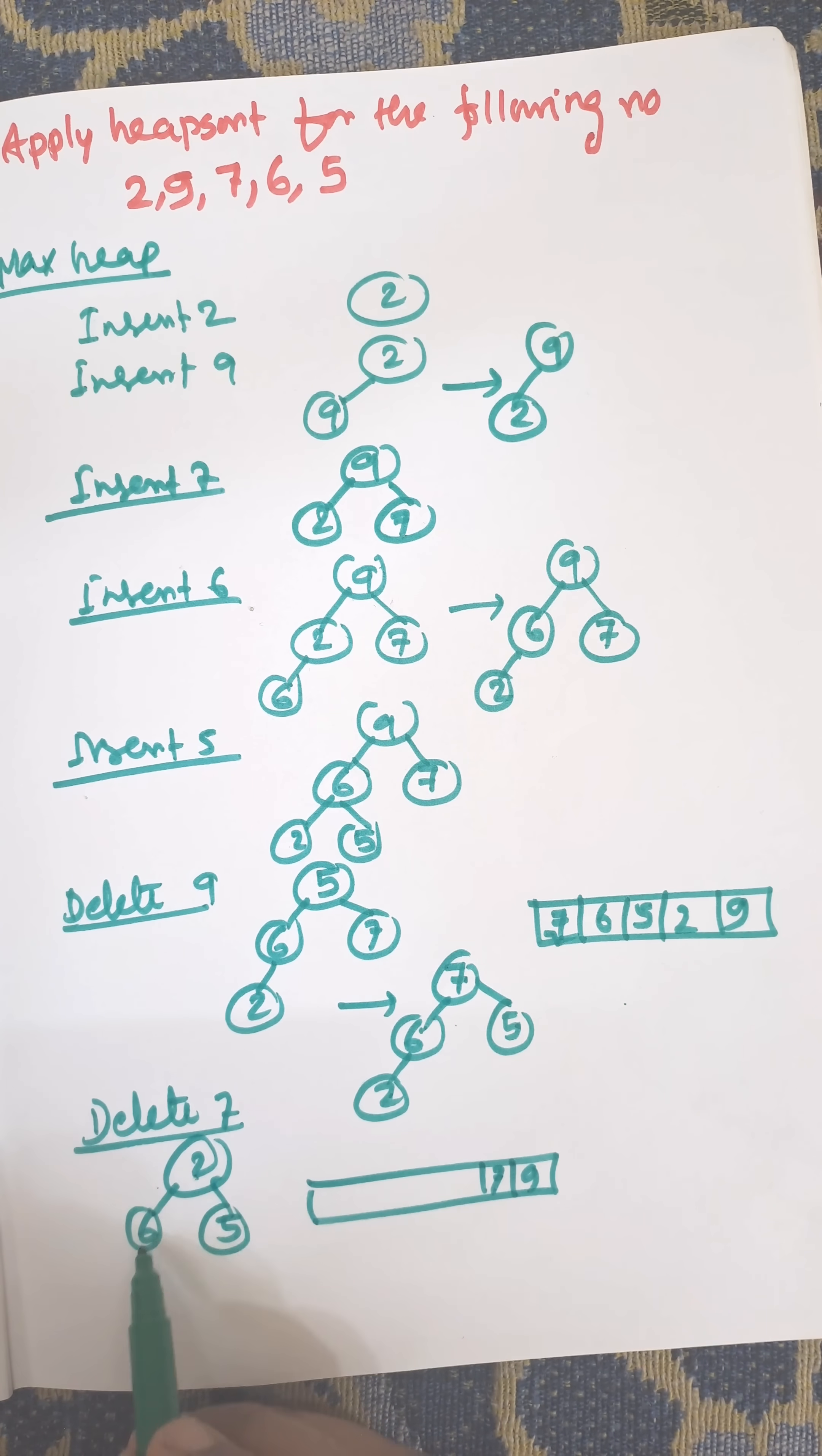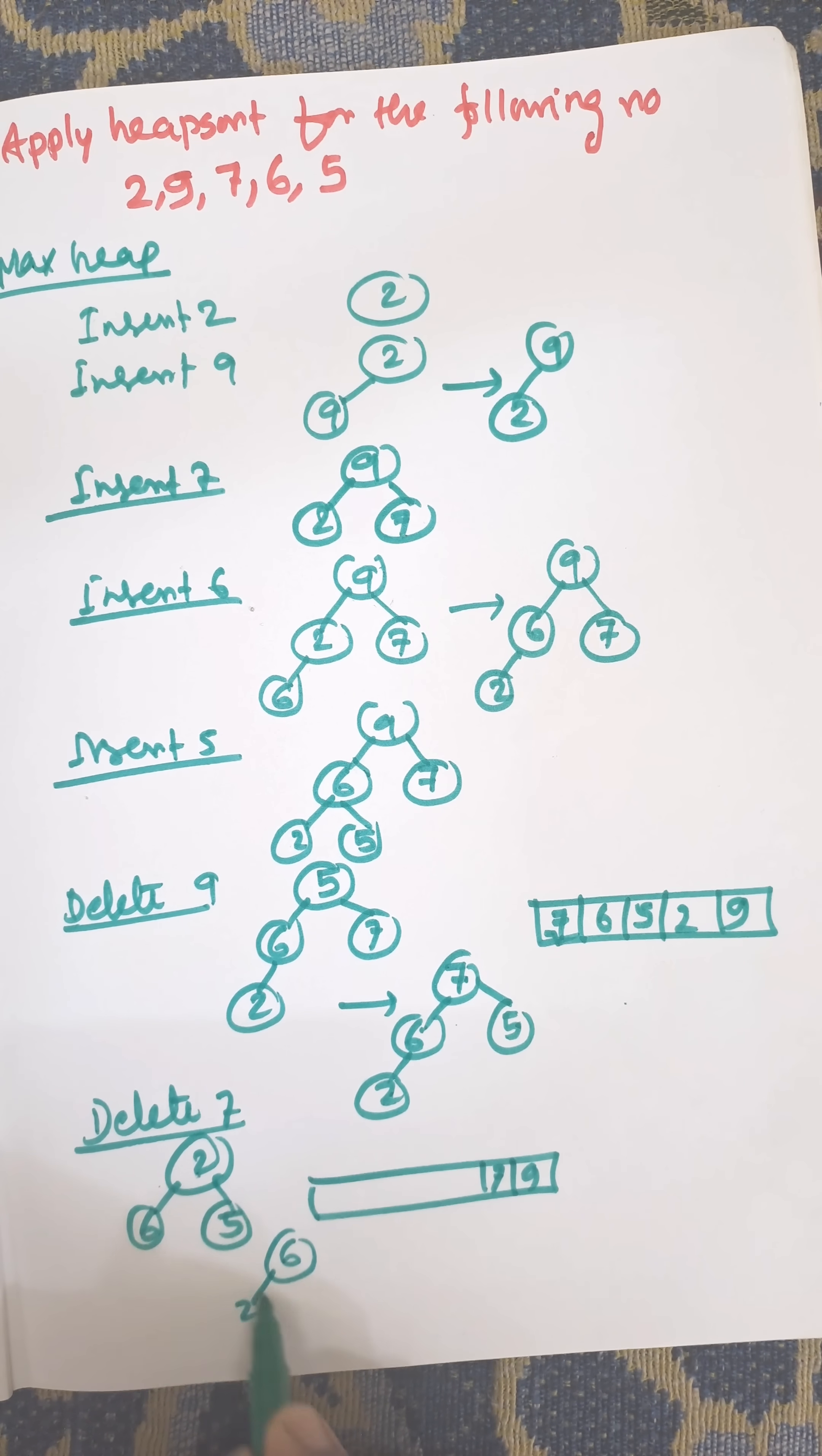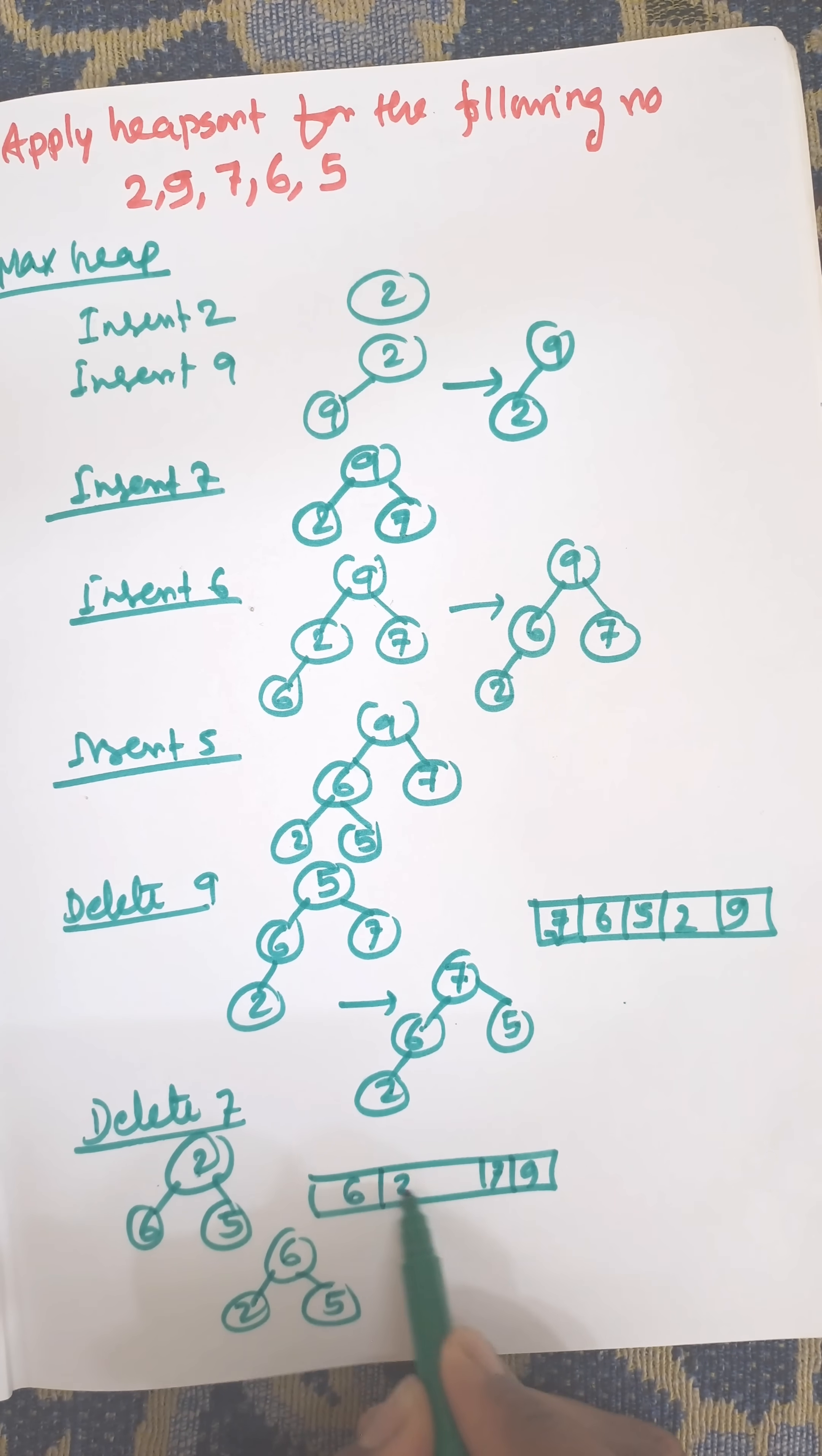And this is not a MaxHeap. Between 2 and 6, 6 will be the root node. And now the array is 6, 2, 5.